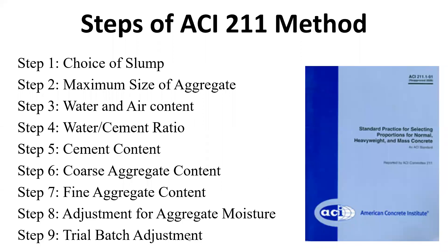Welcome to another fun-filled topic today. We're going to be talking about ACI 211 mix design method — this is the 1991 version, ACI 211, American Concrete Institute. There is a committee called 211, and I'm actually part of it. They do lots of different documents, and one they're very famous for is ACI 211.1: standard practices for selecting proportions for normal, heavy, and mass concrete.